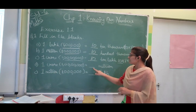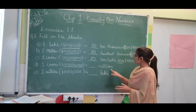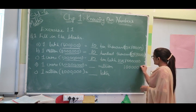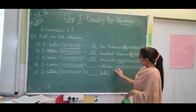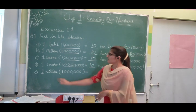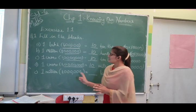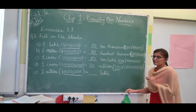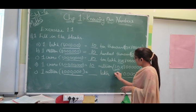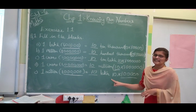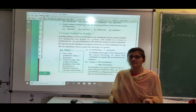Next: 1,000,000,000 equals how many lakhs? One lakh has 5 zeros, and one billion has 9 zeros. We need 4 more zeros beyond lakh, so multiply by 10,000. Therefore 1,000,000,000 = 10,000 lakhs. From Exercise 1.1, questions 2, 3, and 4 you have to do by yourself. Now we will move to the next topic.